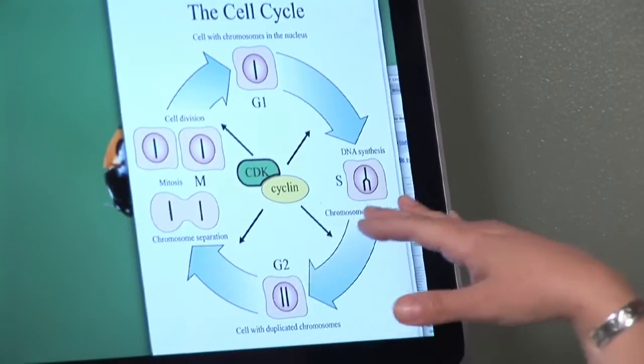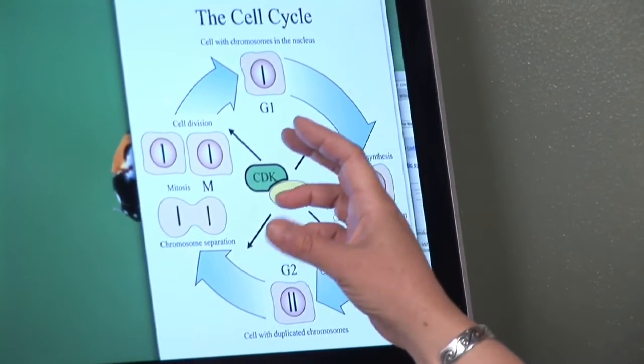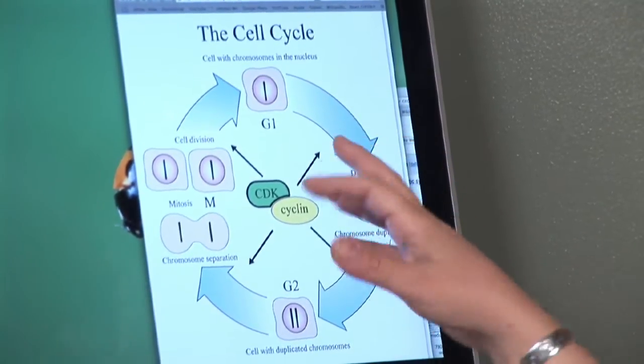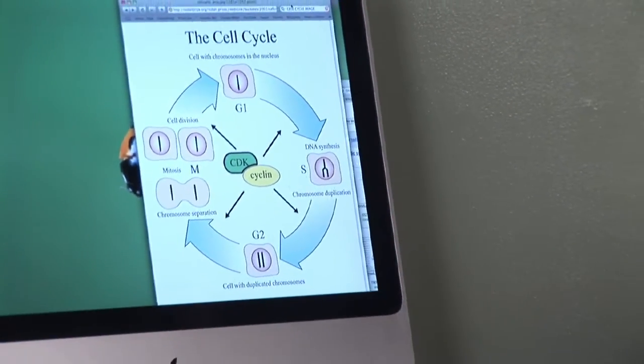Once that interphase is done, the cell can go into the process of cell division. That's where the nucleus divides, the cell pinches through something called cytokinesis, and two complete new cells are formed.